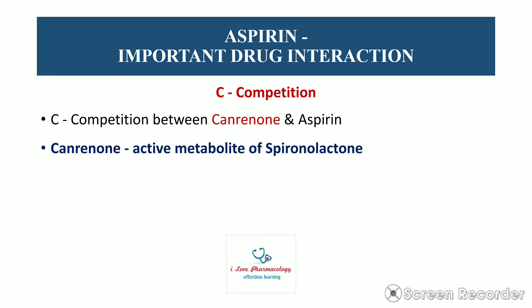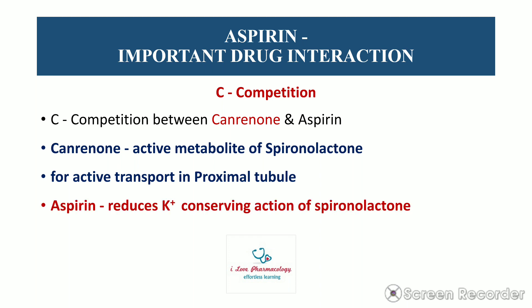The third drug interaction: Aspirin Competes with canrenone in the renal system. Canrenone is an active metabolite of spironolactone. Both compete for active transport in the proximal tubule, thereby aspirin reduces the potassium-conserving action of spironolactone, as well as blunting the antihypertensive action of spironolactone.